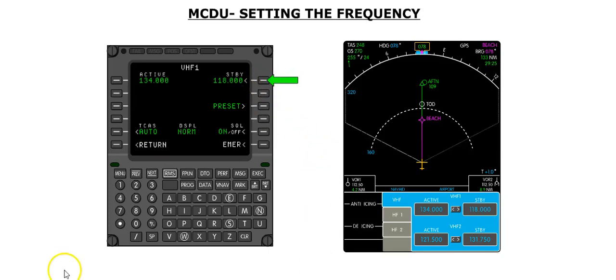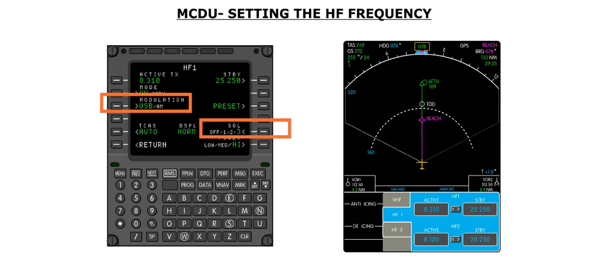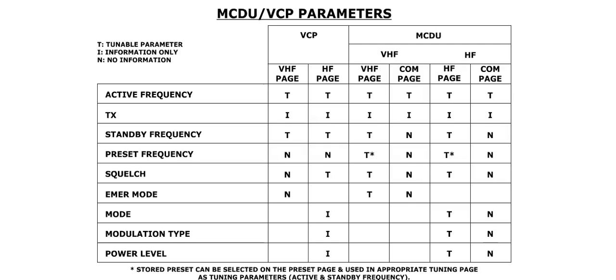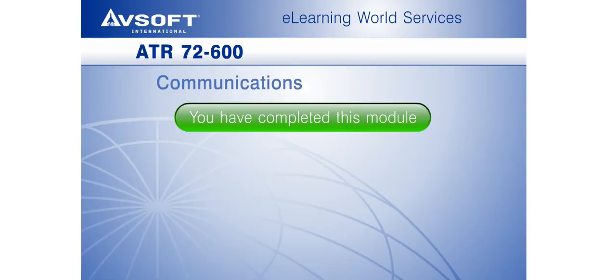A standby frequency is made active by pressing the R1 line select key. The HF radios are controlled using the MCDU in the same fashion. The HF page also provides control of the modulation mode, as well as the squelch and power level. Some radio parameters can only be set using the MCDU. The table on this screen shows the parameters you can control through the VCP and MCDU. This concludes the communications module.